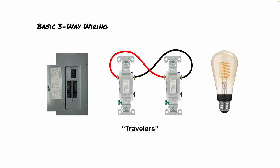Now let's talk about the travelers. Travelers go between the two brass terminals on both light switches and control the circuit to turn the light fixtures on and off. You typically have a red wire and a black wire going between the two switches. Sometimes, though, you'll have a red wire and a white neutral wire with black tape on it to indicate it's also used for power. Those are the two different types of traveler wiring you'll see.